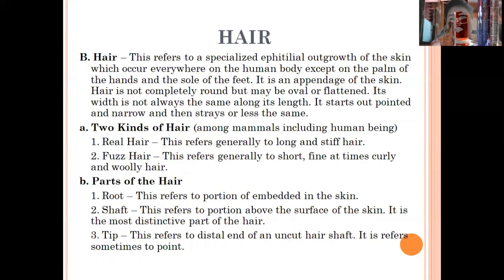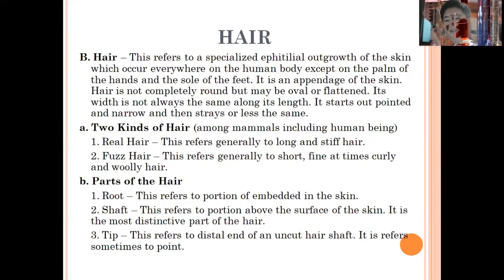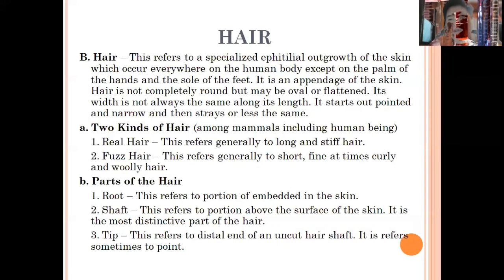There are two types of hair: terminal hair and vellus hair. Terminal hair refers to the long hair that can be located on our body — commonly on the head. Vellus hair refers to the short hair on our body, such as on the hands, legs, and body surface. Pubic hair is still categorized as terminal hair because it is long and stiff. Vellus hair is short, fine, curly, and woolly.